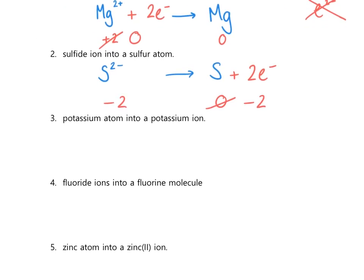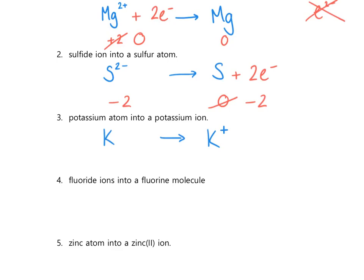Next, a potassium atom changing into a potassium ion. The potassium atom has no charge, so it's just K — the symbol for potassium. That's changing to a potassium ion. Looking at the periodic table, potassium is in group 1 and forms ions with a charge of plus 1. When writing the formula, we just write K⁺ — we don't write plus one or one plus, just plus. Don't include ones in formulas. The charge on the left hand side is zero — no charged particles, no pluses or minuses.